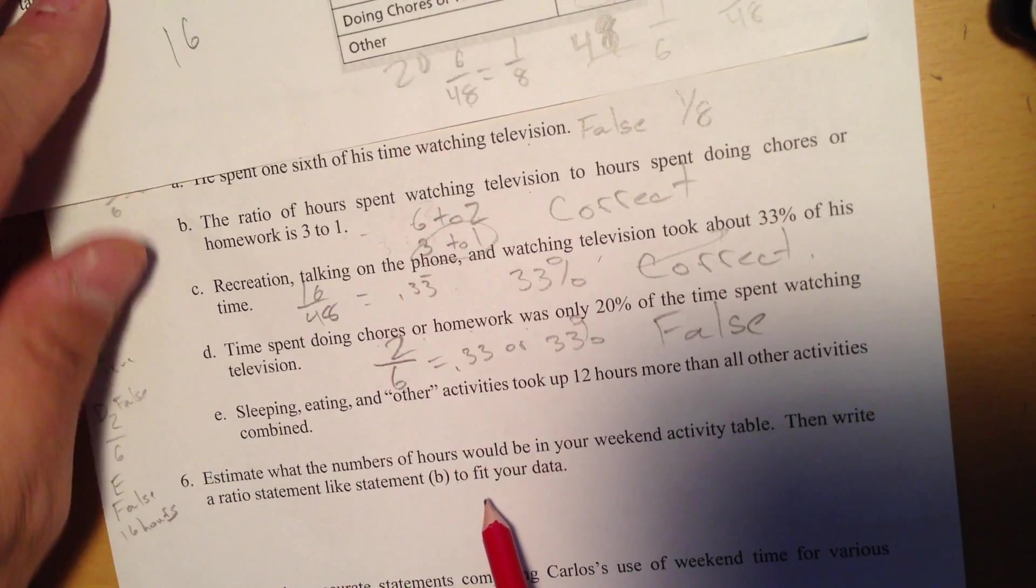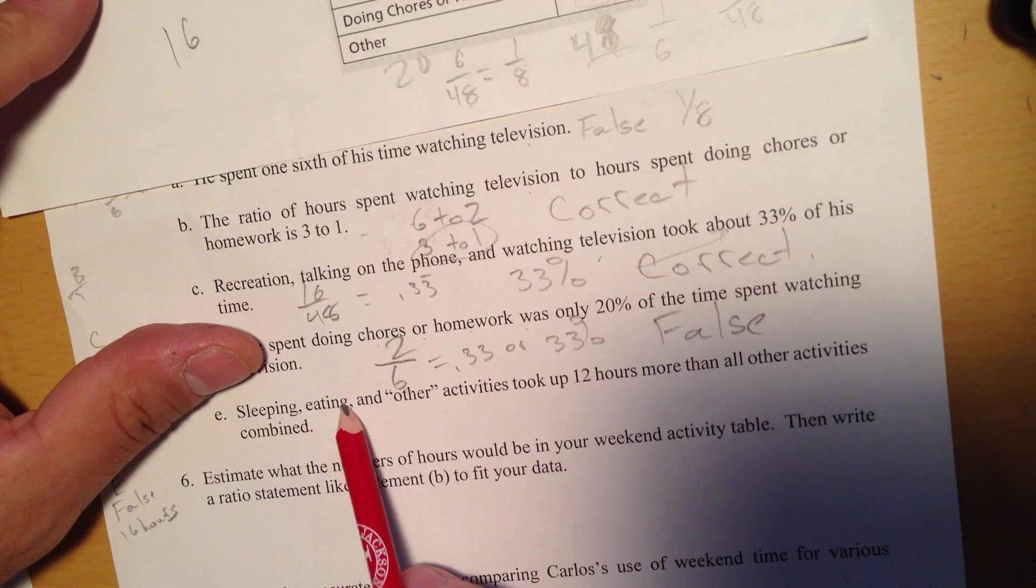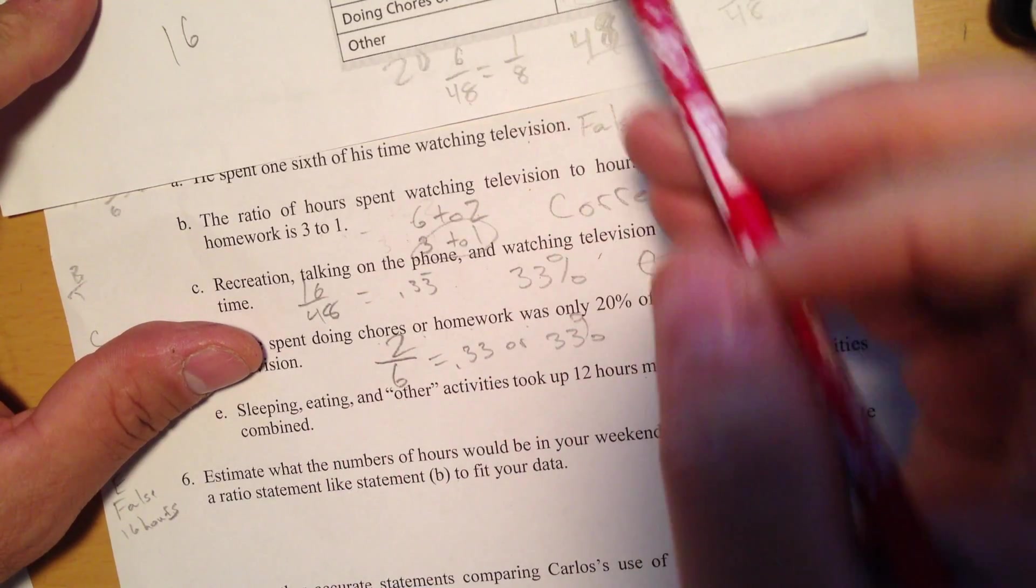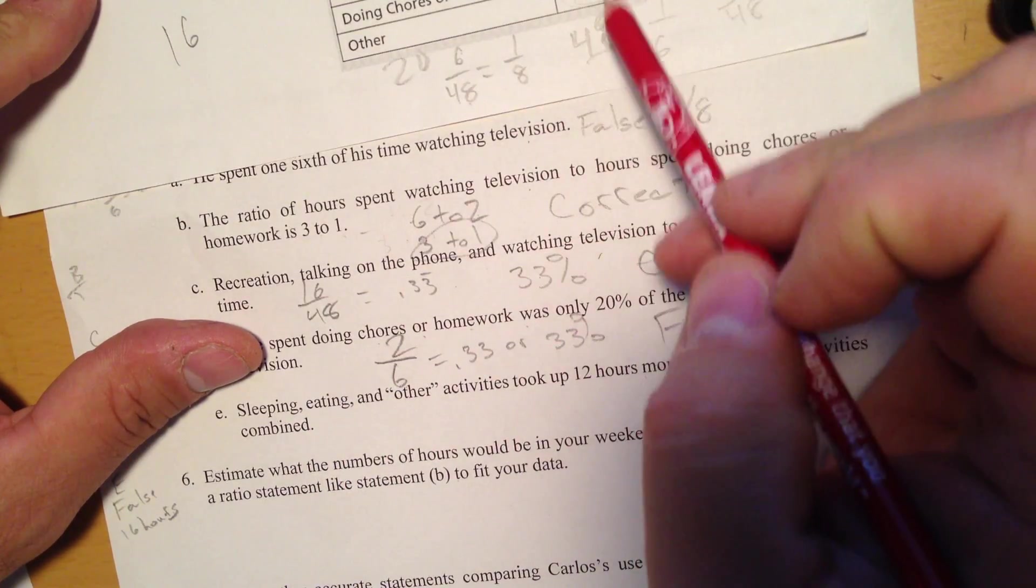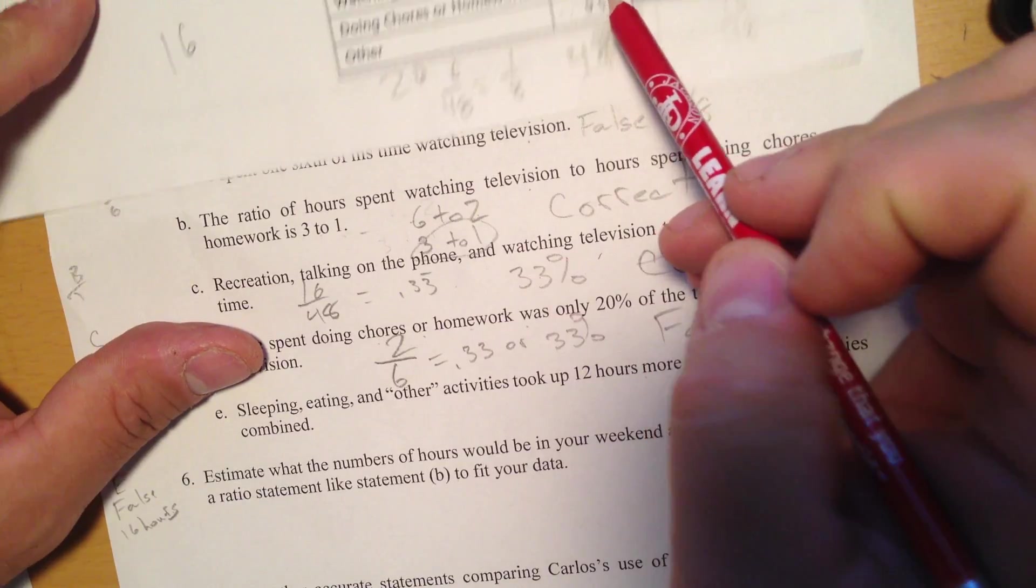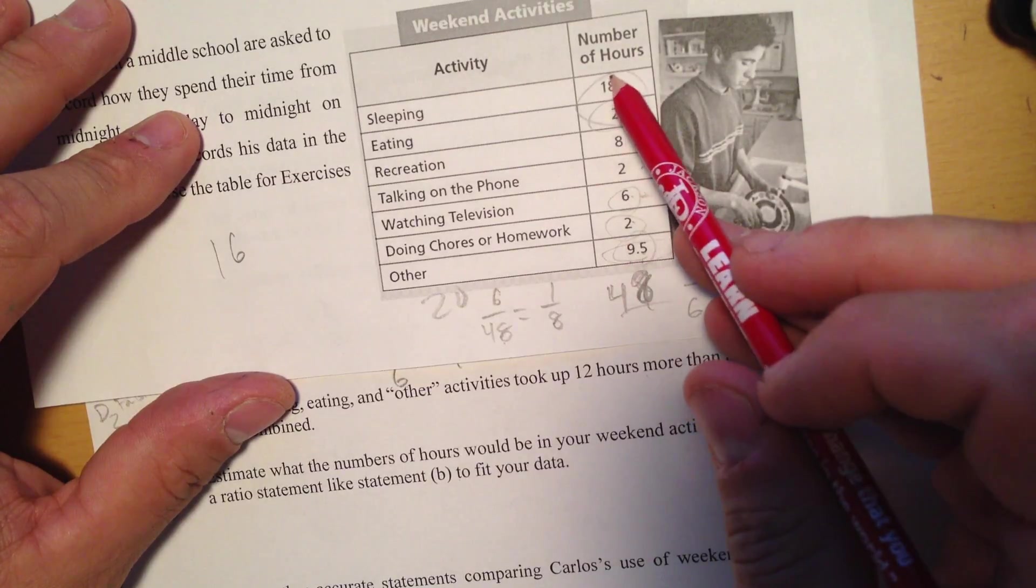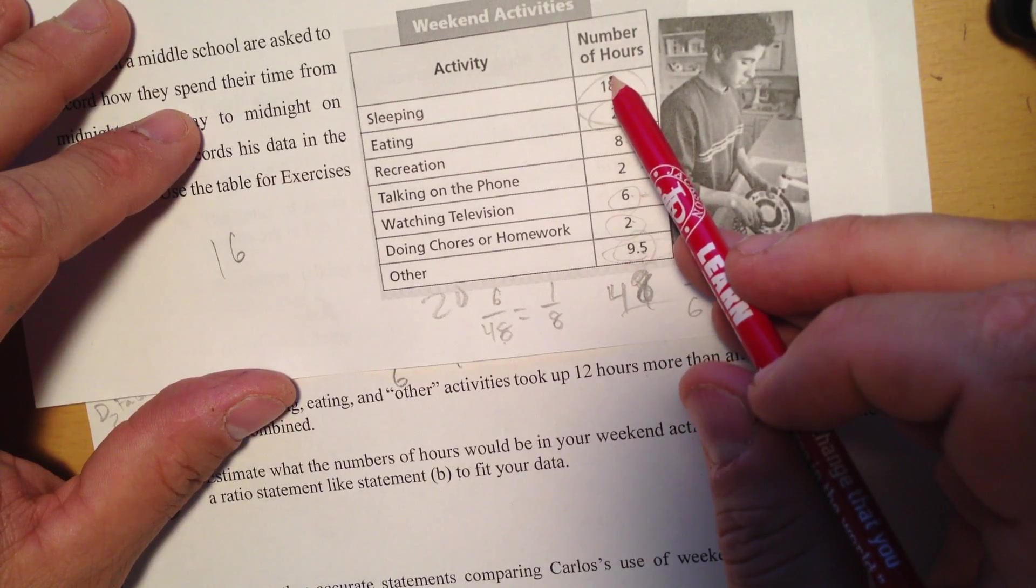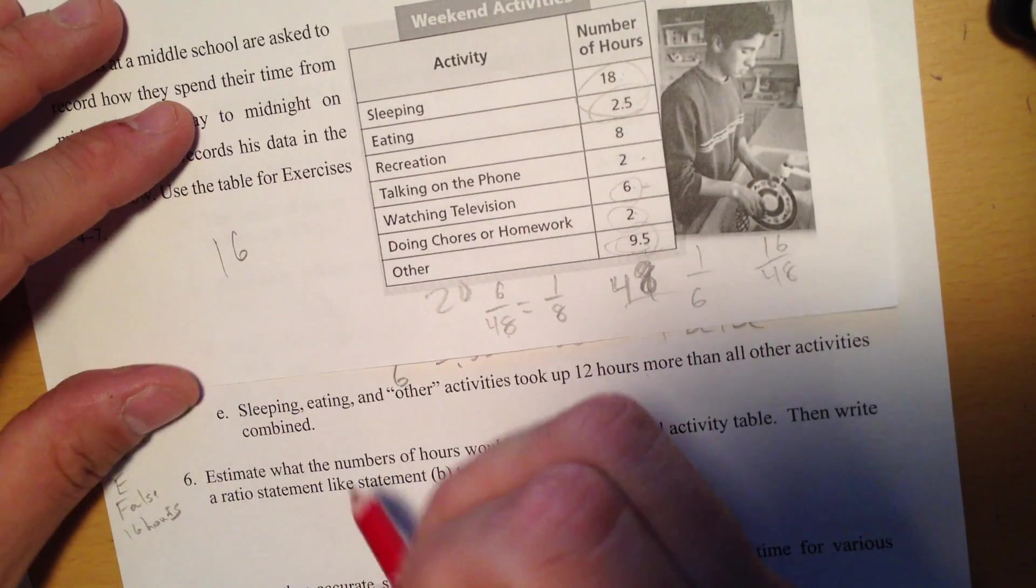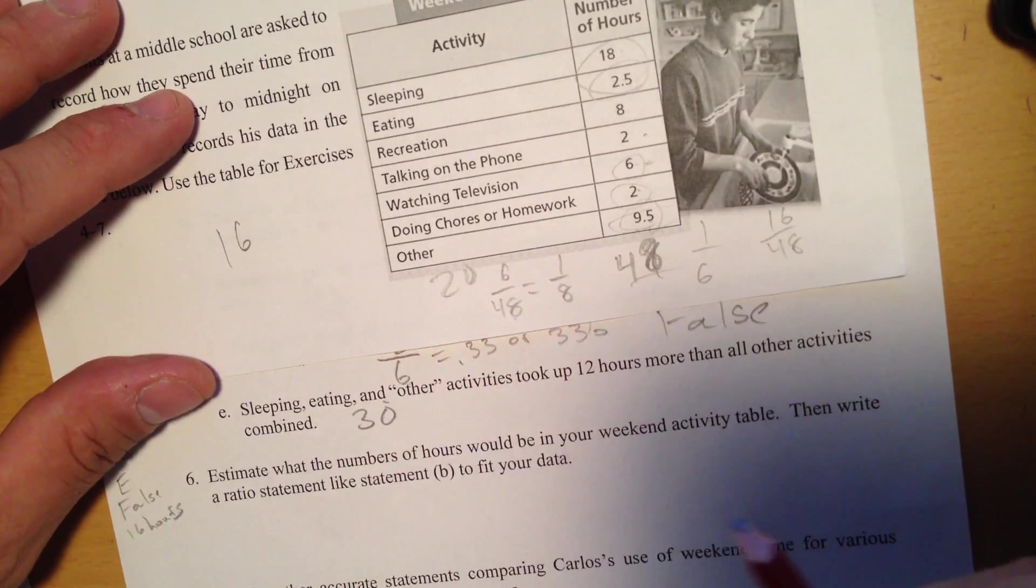9.5, 2.5, well those go together nice. It's going to be 10 plus 2 is going to give me 12. And then sleeping is 18. Well, 18 plus 12 is 30. So I've got a total of 30 hours in these three.